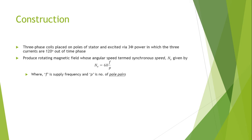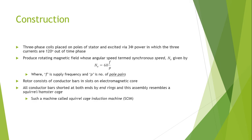p is the number of pole pairs. The rotor consists of conductor bars in slots on an electromagnetic core. All conductor bars are shorted at both ends by end rings, and this assembly resembles a squirrel cage. Such a machine is known as a squirrel cage induction machine.